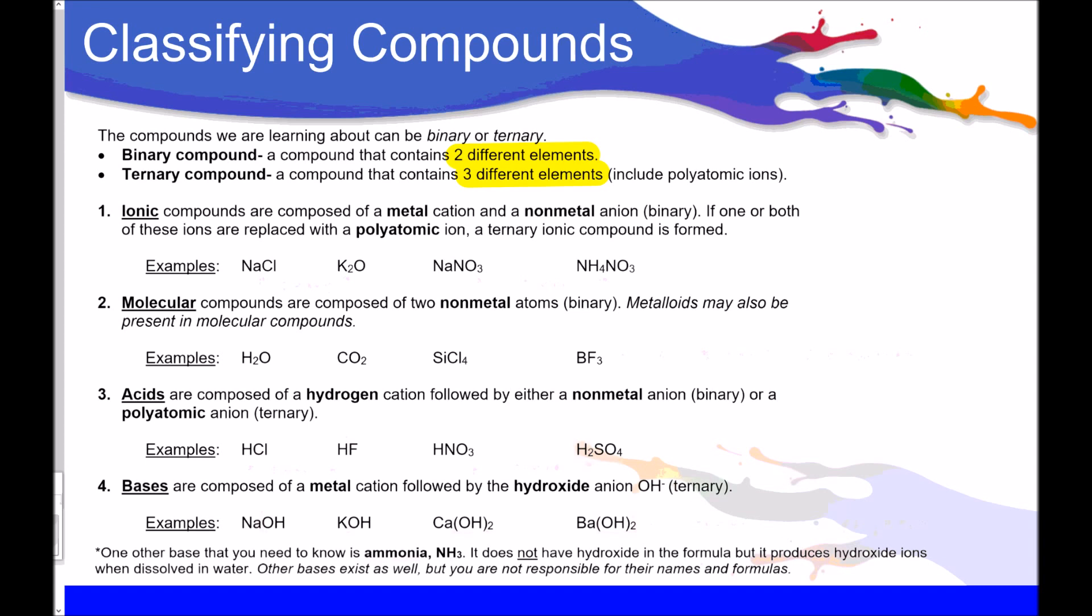Ternary compounds, on the other hand, have three different elements, which means that they are going to include polyatomic ions. So when you think ternary, think polyatomic ions. Something like sodium phosphate is going to have sodium, phosphorus, and oxygen, because phosphate is a polyatomic ion that would make something ternary.